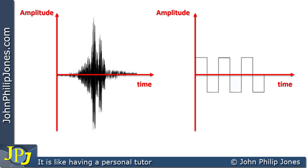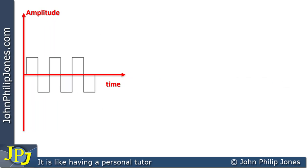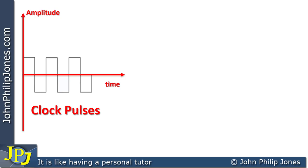The last video in the playlist looked at analogue and digital signals. As you're looking at the screen, the waveform on the left is an example of an analogue signal, and the one on the right is an example of a digital signal. Let's consider a digital signal, and here you can see I'm labeling it as clock pulses, and this is a typical use of a digital signal within a computer.